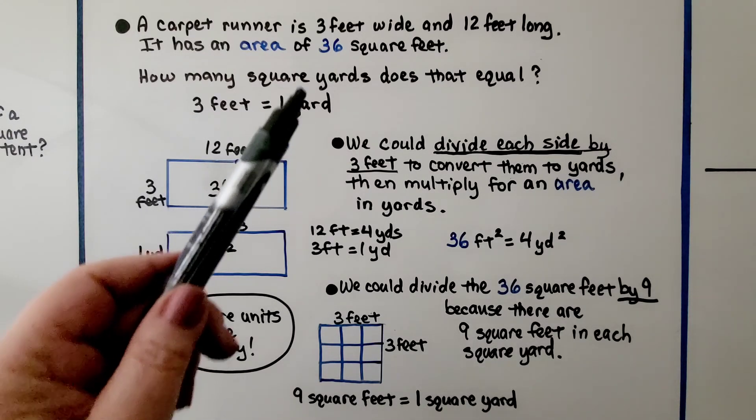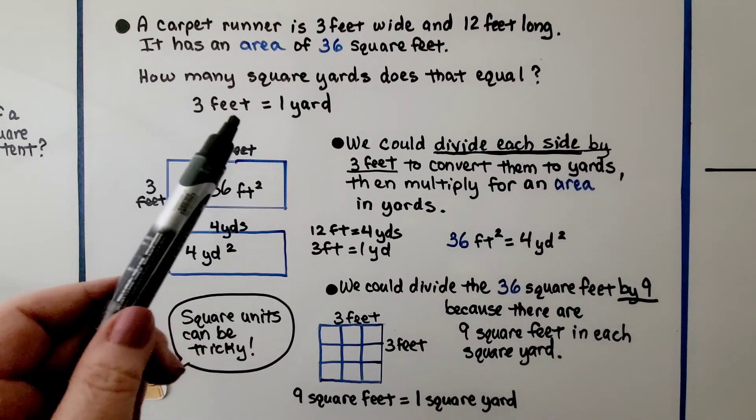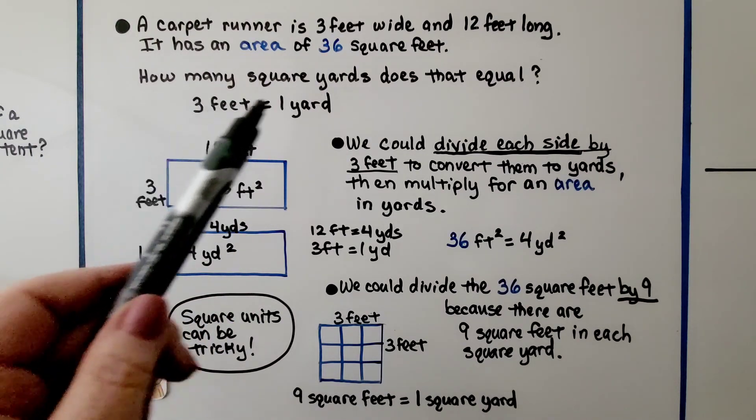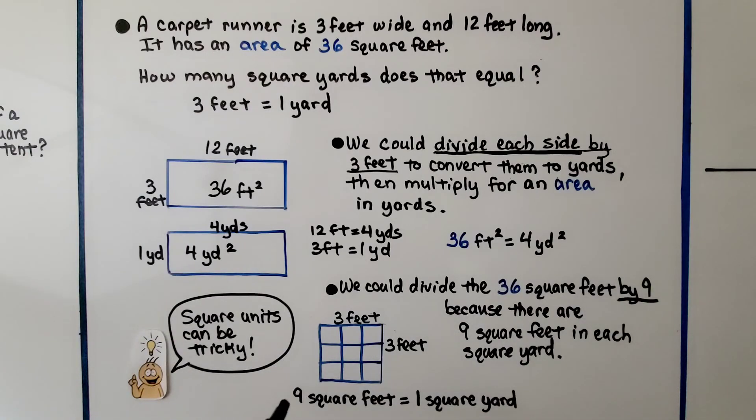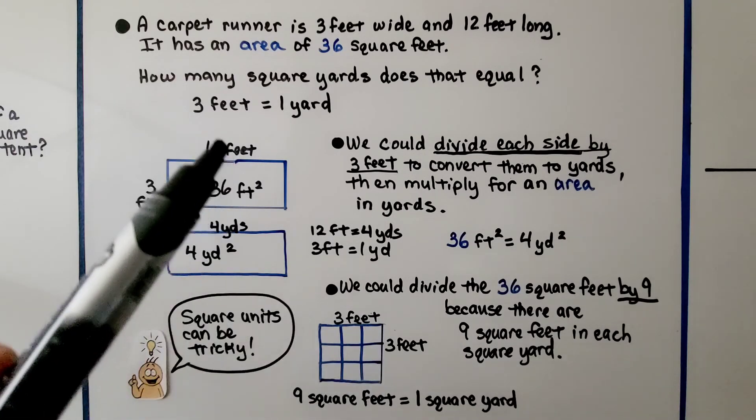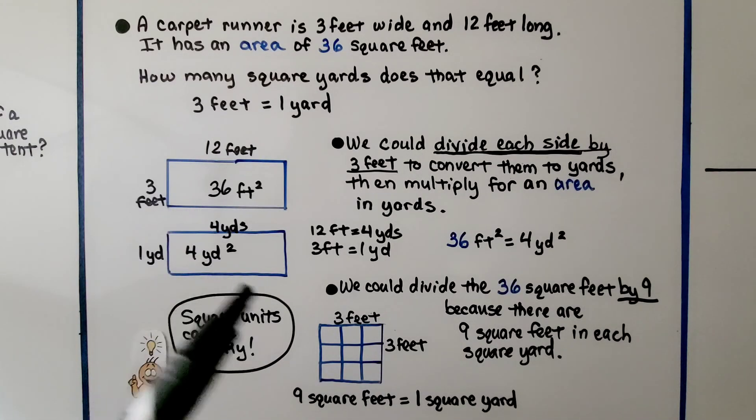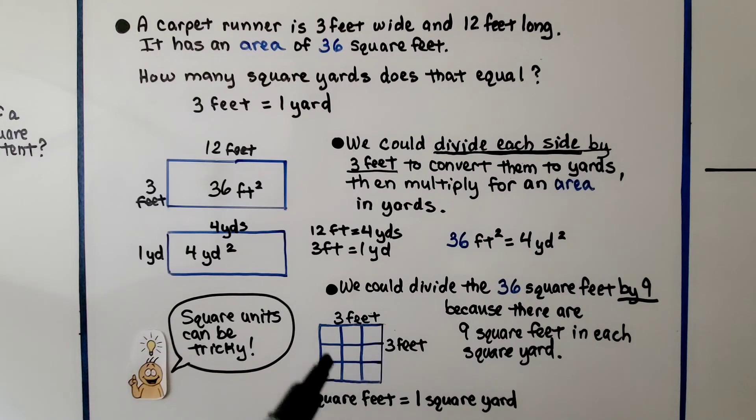This is where it gets tricky. Some people would think, because this is 36 square feet, that you could just divide it by 3 feet equals 1 yard, but there's 9 square feet in 1 square yard. We could divide the 36 square feet by this 9, because there's 9 square feet in 1 square yard. So be careful, because square units can be tricky. You have to remember that it's not just 3 feet to 1 yard when we're talking about square units. This is 9 square feet to 1 square yard.